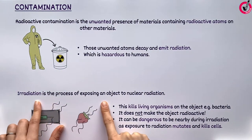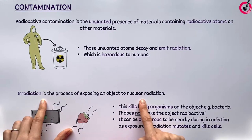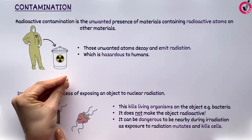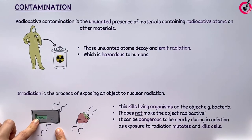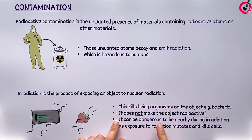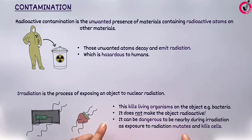Irradiation is the process of exposing an object to nuclear radiation with the purpose of killing living organisms on the object. For example, medical equipment that is sealed in its packaging can be irradiated to sterilise it and kill any bacteria on it. This is done by exposing the object to gamma radiation, which passes through the packaging and kills any living organisms on the syringe. Irradiation is also used to kill microorganisms on food and make it last longer. The process of irradiation does not make the object itself radioactive, but it can be dangerous to be nearby when it is happening, and safety precautions must be taken, such as protective clothing or keeping a safe distance away.